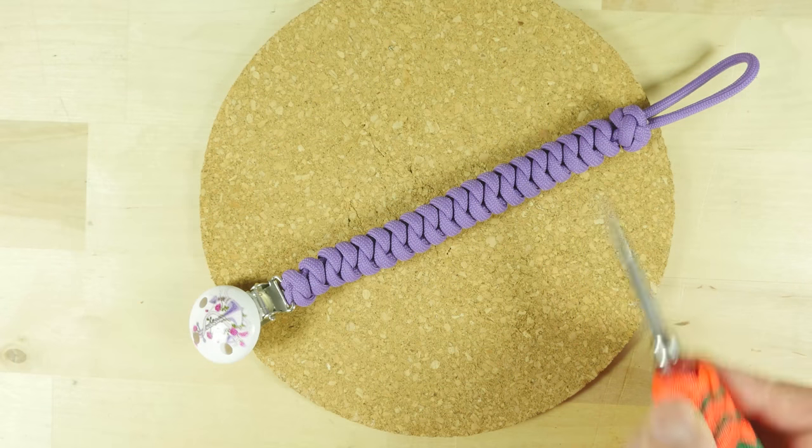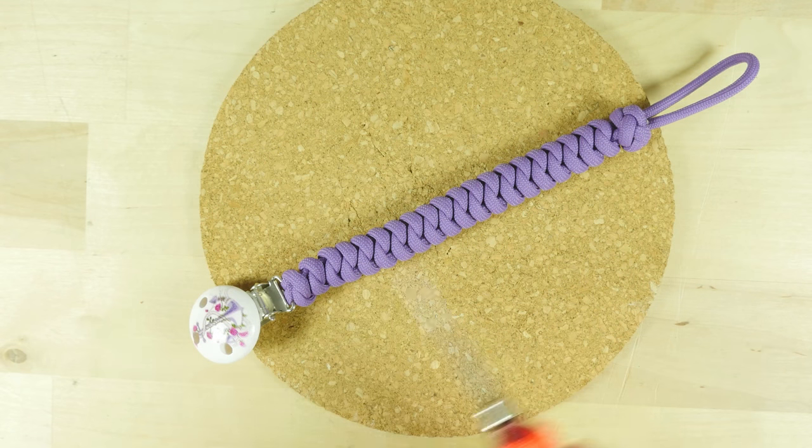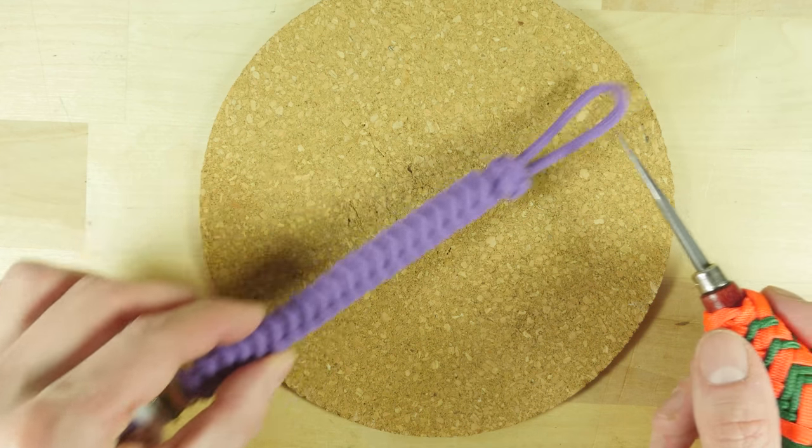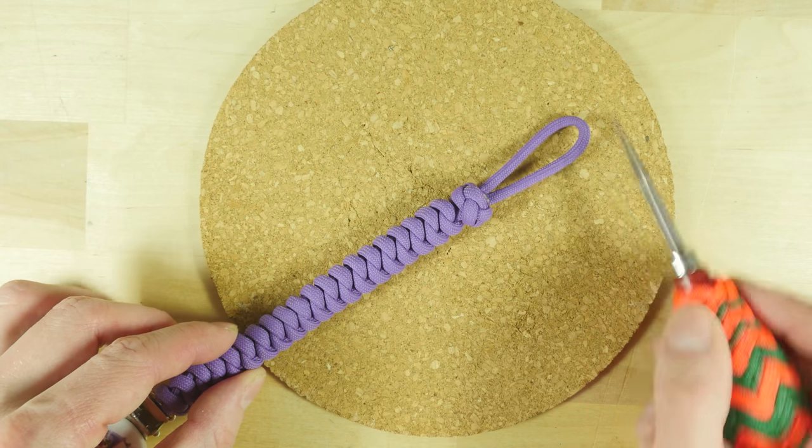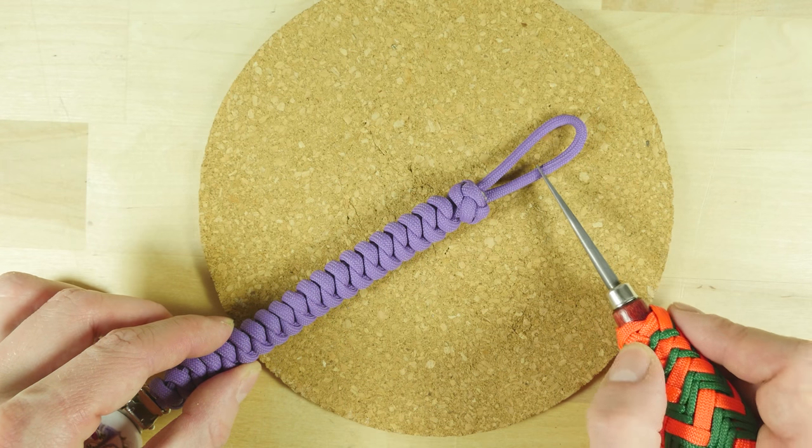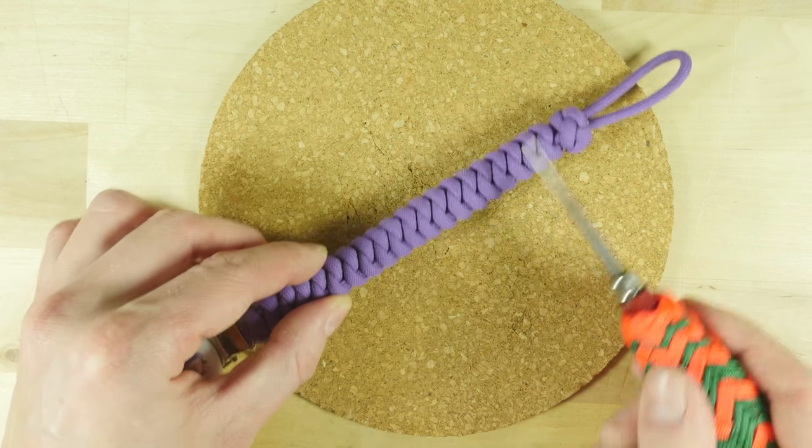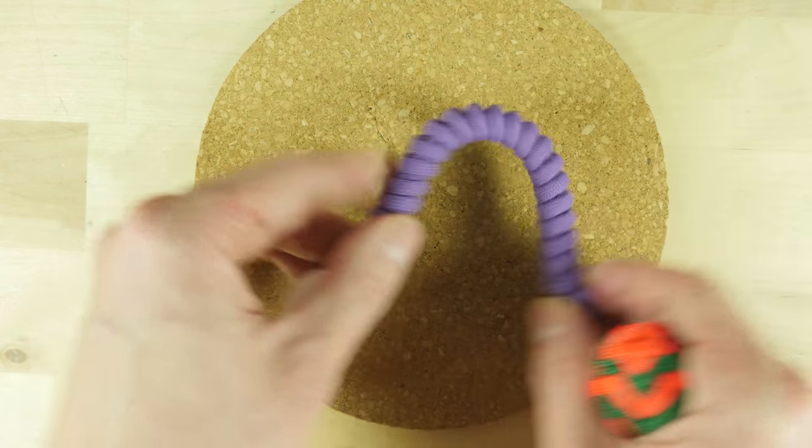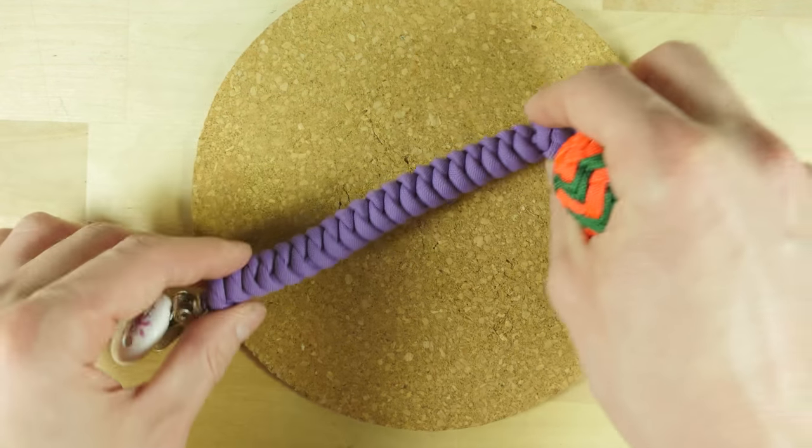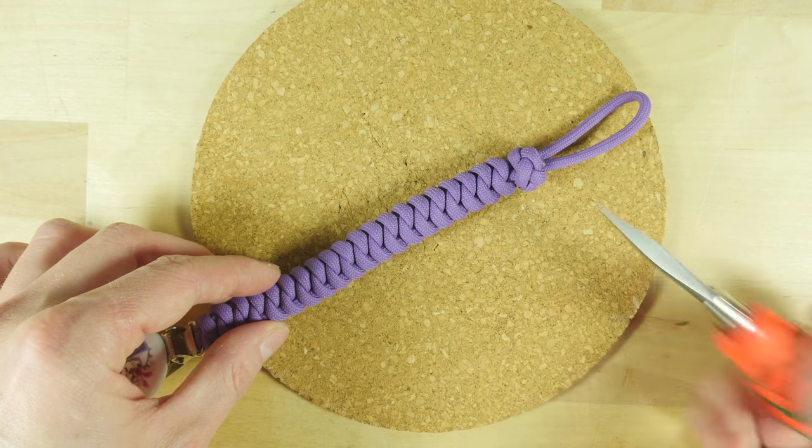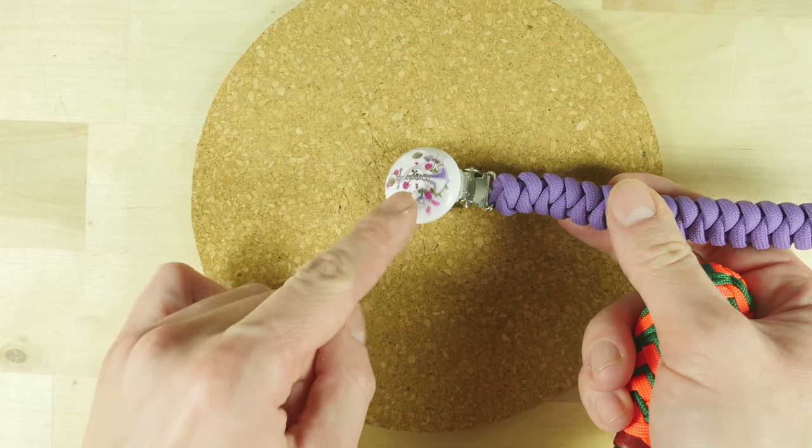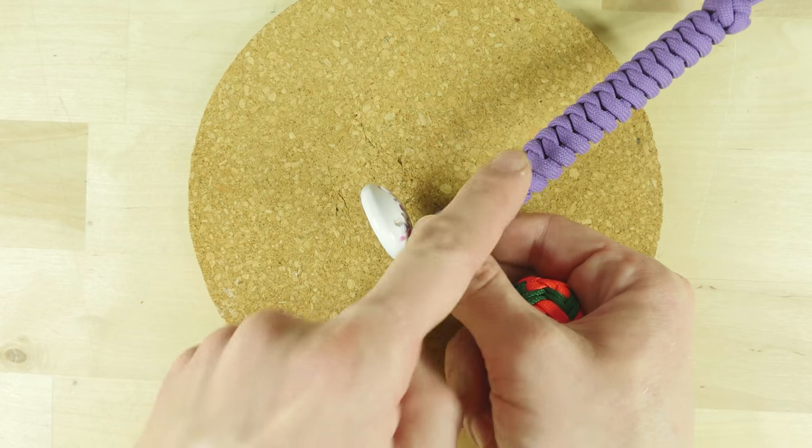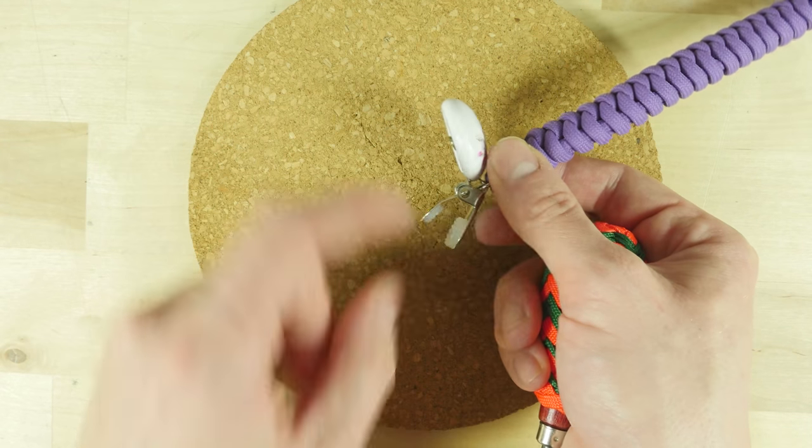Here you can see an example of the pacifier holder that we're going to be making. Usually a pacifier holder sports a loop on one side which is used to attach the pacifier onto the holder. Then we have the body of the pacifier holder, which needs to be fairly flexible so that we can manipulate the pacifier. Then finally we have a clip on the other side, which we use in order to attach the pacifier holder onto the baby's clothes.